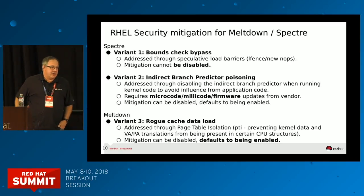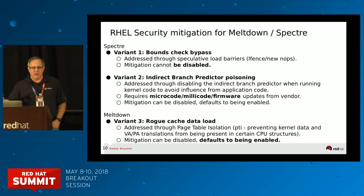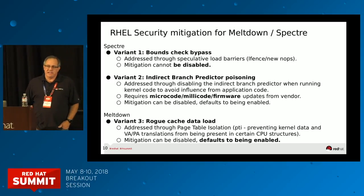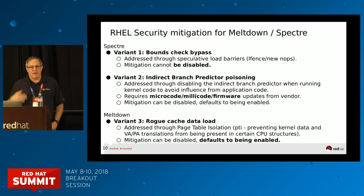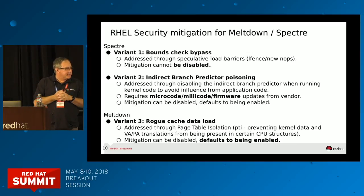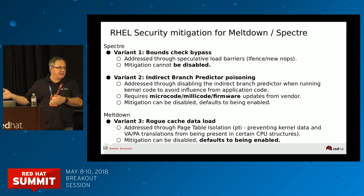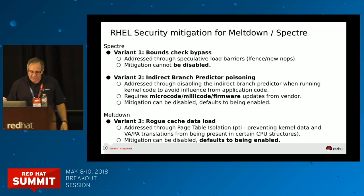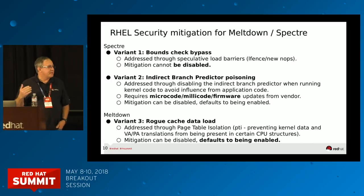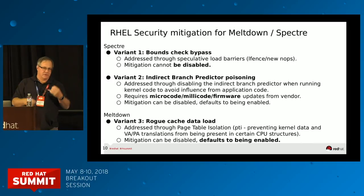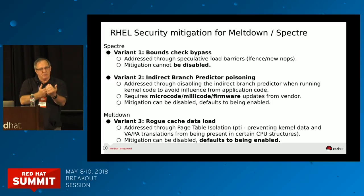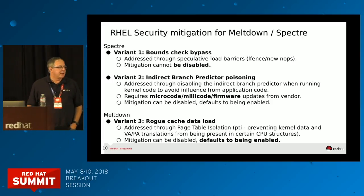Two other areas of performance that are fairly recent and relevant to all of our customers are security mitigations and vulnerabilities. We have a team running lots of different applications, so any security patches that appear in Red Hat go through the performance team and our QE team. This was a little different because we actually did measure performance differences. Traditionally they're 0 to 3%, but in this case the Spectre and Meltdown are the two vulnerabilities we're talking about.